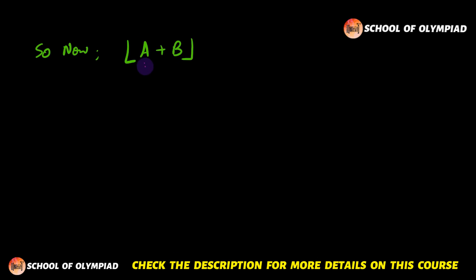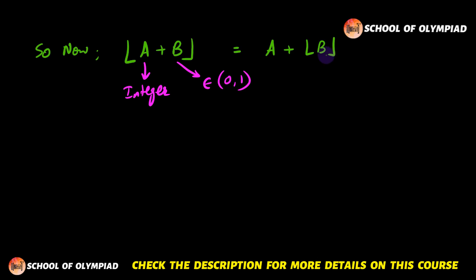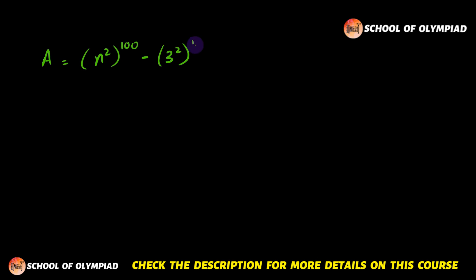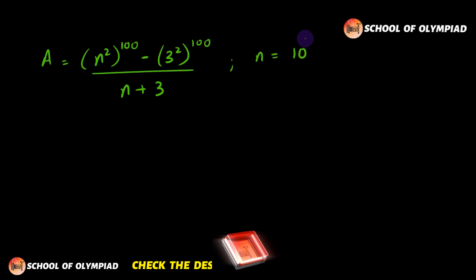Our expression is the floor function of A plus B, where A is an integer and B is between 0 and 1. By the property of floor functions, this equals A plus the floor of B. Since the floor of B equals 0, the whole expression reduces to A, which is (n²)^100 − (3²)^100 divided by (n+3), where n equals 10^100.